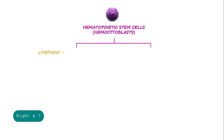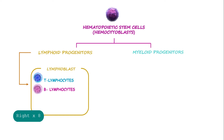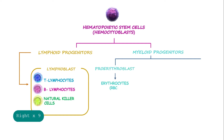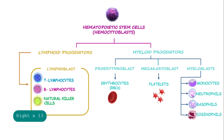can become lymphoid progenitors or myeloid progenitors. The lymphoid progenitors can develop into lymphoblasts, which can then differentiate to some white blood cells, such as T lymphocytes, B lymphocytes, and natural killer cells. Myeloid progenitors can be differentiated into erythrocytes or red blood cells, megakaryocytes, which eventually give rise to platelets, or myeloblasts, which can be the other white blood cells, like monocytes, neutrophils, basophils,